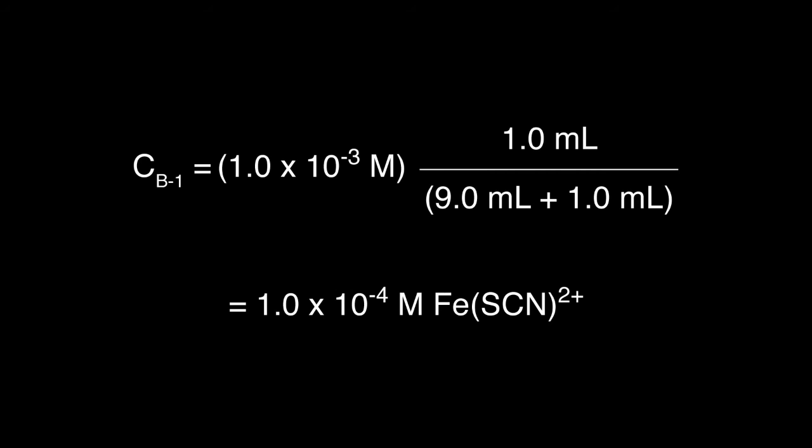Concentration B1 is equal to 1.0 times 10 to the minus 3 molar times 1.0 milliliters divided by 9.0 milliliters plus 1.0 milliliters equals 1.0 times 10 to the minus 4 molar iron thiocyanate complex.